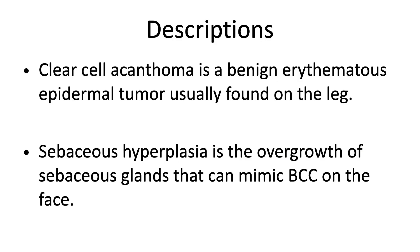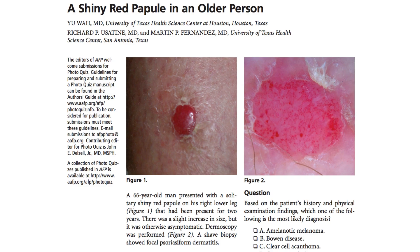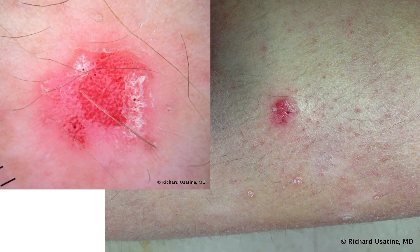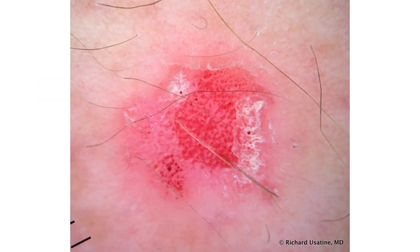What are these? The clear cell acanthoma is a benign erythematous epidermal tumor, usually found on the leg. Sebaceous hyperplasia is the overgrowth of sebaceous glands that can mimic a BCC on the face. Here is a case of a clear cell acanthoma — you can see there is a string of pearls pattern when we look with dermoscopy, showing those red vascular pearls basically in a string throughout the benign tumor.